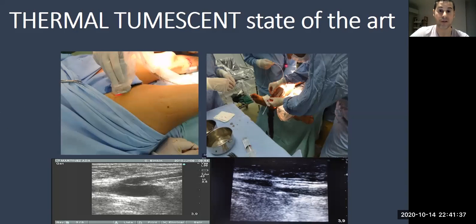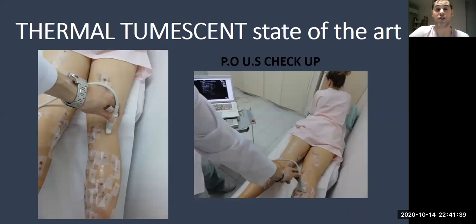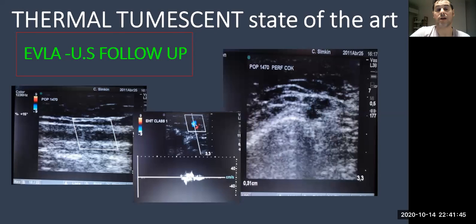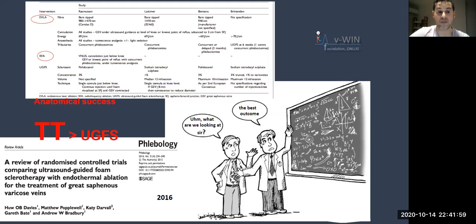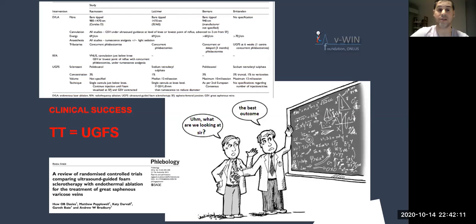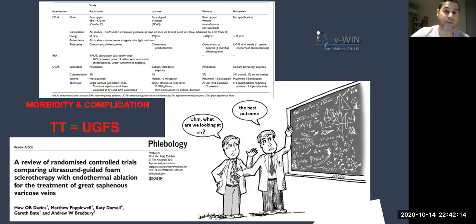This is how we perform the procedure and check post-procedure closure rates via ultrasound follow-up to detect heat-induced thrombosis. A randomized controlled trial by Bradbury (2016) comparing ultrasound-guided foam sclerotherapy with thermal ablation for great saphenous varicose veins found that thermal tumescent techniques present better anatomical success, but similar clinical success, with comparable morbidity and complications in both techniques.